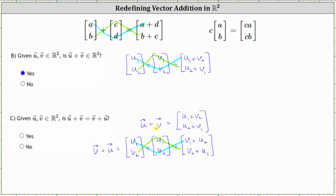And now comparing the sums, notice u sub one plus v sub two does not equal v sub one plus u sub two. And u sub two plus v sub one does not equal v sub two plus u sub one. These sums are not the same, and therefore the axiom fails. The answer is no. And since the axiom fails, we do not have a vector space under the new definition of vector addition. I hope you found this helpful.